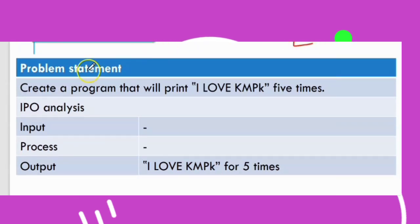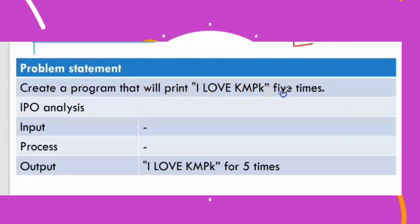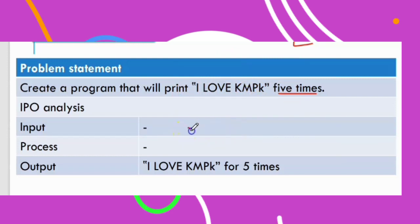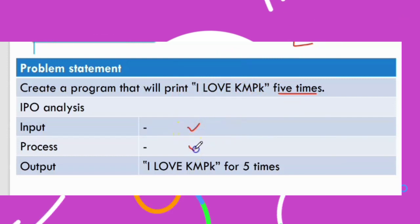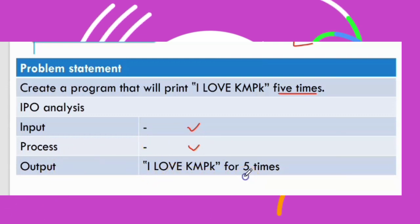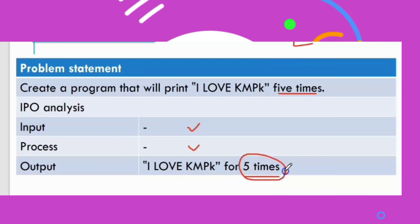For the first example, the problem statement is: create a program that will print 'I love Campy Key' five times. For input, there is no input required. For process, there is no process. For output, print 'I love Campy Key' five times — this output is compulsory since it is printed five times.